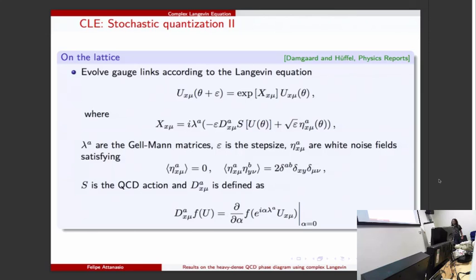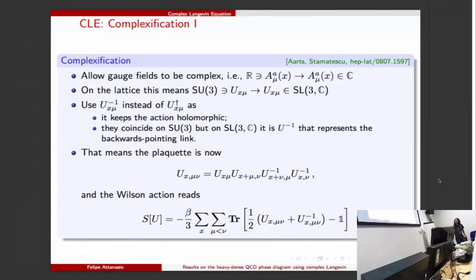To deal with the sign problem we use complex Langevin - now comes the complex part. We allow the gauge fields to be complex. On the lattice that means we are not on SU(3) anymore but we are on the larger group SL(3,C). We have to change a little bit the action because it has to be holomorphic, and to keep it holomorphic we use U inverse instead of U dagger because now U inverse represents the links pointing in the backwards direction.